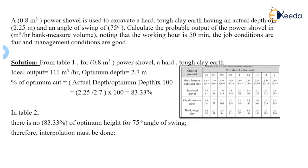A 0.8 m³ power shovel is used to excavate a hard tough clay earth having an actual depth of 2.25 m and an angle of swing of 75%. Calculate the probable output of power shovel in meter cube per hour bank measure volume, noting that the working hour is 50 minutes. The job conditions are fair and management conditions are good.